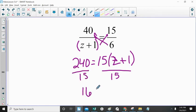When I do that, 240 divided by 15 is 16, and then I'm left with z plus 1.